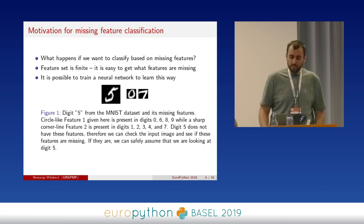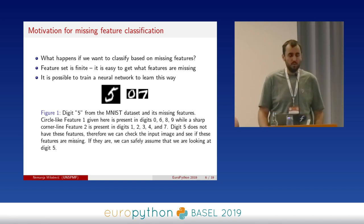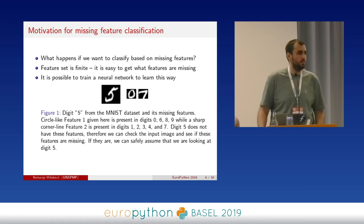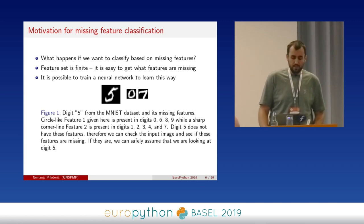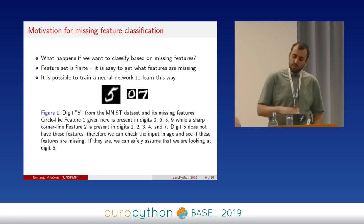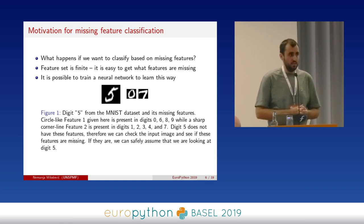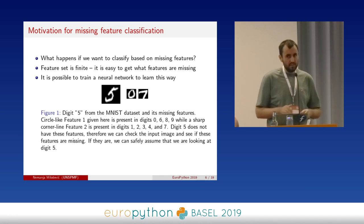So what about missing feature classification? My idea with this neural network model was: what happens if we try to classify something based on the features that are NOT in the image? Instead of saying a dog has certain features, you can say a dog doesn't have headlights, if you're also classifying cars. Here is a motivational example from the MNIST dataset — a dataset of handwritten digits. We have a digit five, and two very high-level features: one circle-like feature, and one corner-line feature that goes left and then right and down. Now imagine you couldn't see the five, and I tell you we're classifying a digit, and I'm 100% sure it doesn't have these two features — no circle-like feature and no corner-line feature.